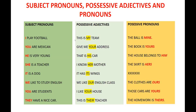Possessive adjectives appear in the middle or at the beginning of the sentence and always modify a noun. Possessive pronouns are different — they emphasize ownership and are written at the end of the sentence. For example: 'The boat is mine,' 'the book is yours,' 'the house is his,' 'the skirt is hers,' 'the clothes are ours,' 'those cars are yours,' 'the homework is theirs.'